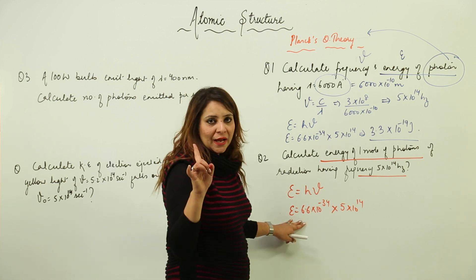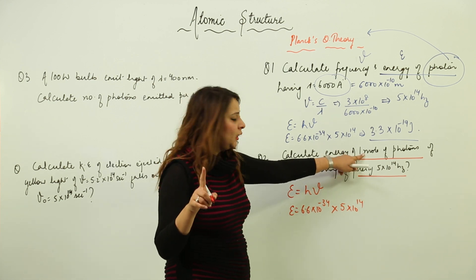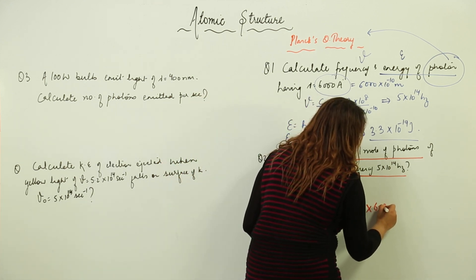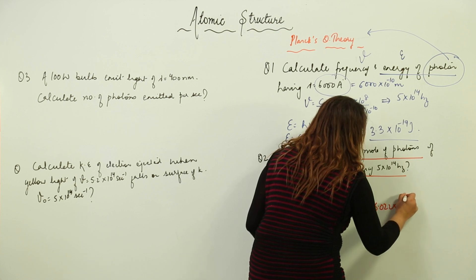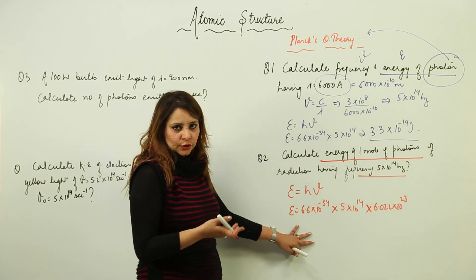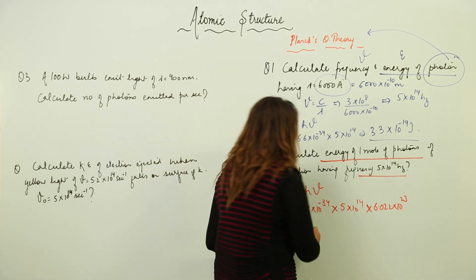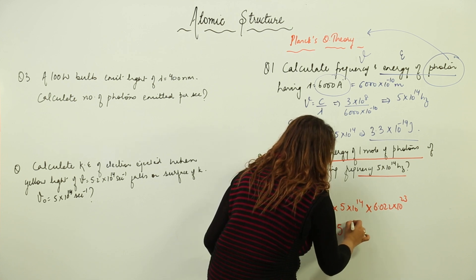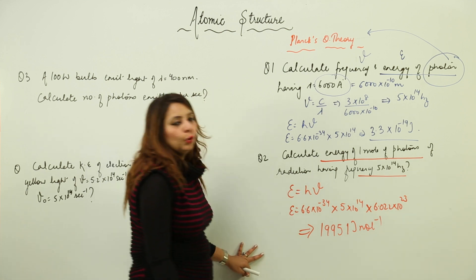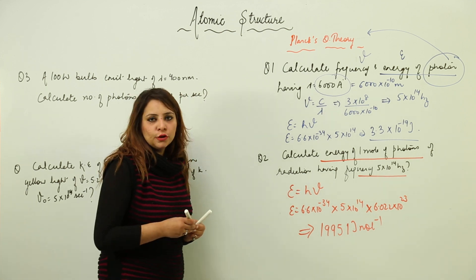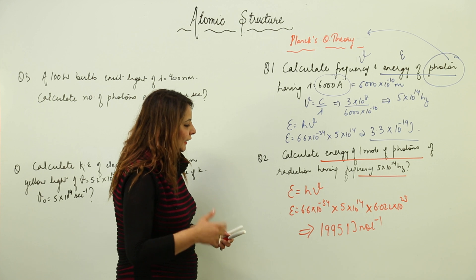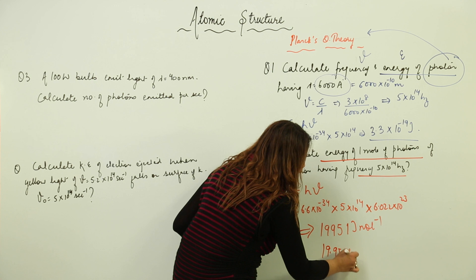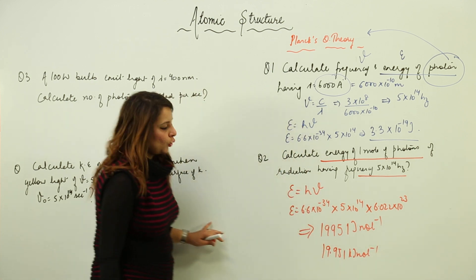This gives the energy of one photon, but we need energy for one mole. One mole contains 6.022 × 10²³ photons (Avogadro's number). Multiplying, we get 19951 joules per mole. Converting to kilojoules by dividing by 1000, the answer is approximately 19.951 kJ/mol.